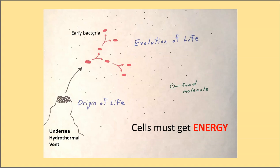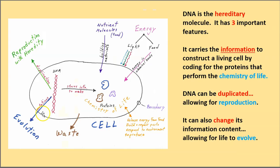But the key to life on Earth was DNA. DNA has three properties that make it the hereditary molecule for life on Earth. It carries the information to construct a living cell by coding for the proteins that perform the chemistry of life. DNA can be duplicated and that allows for reproduction. And DNA can also change its information content, allowing for life to evolve.